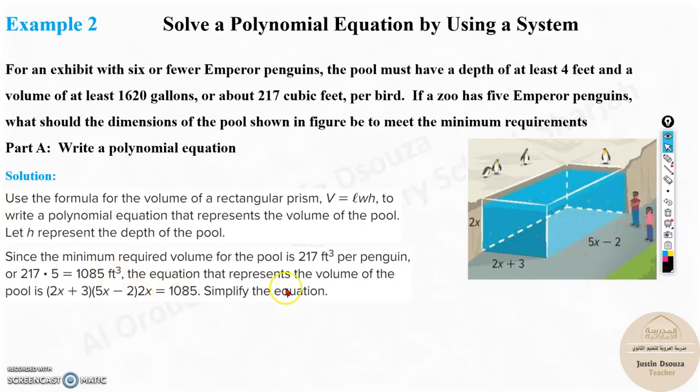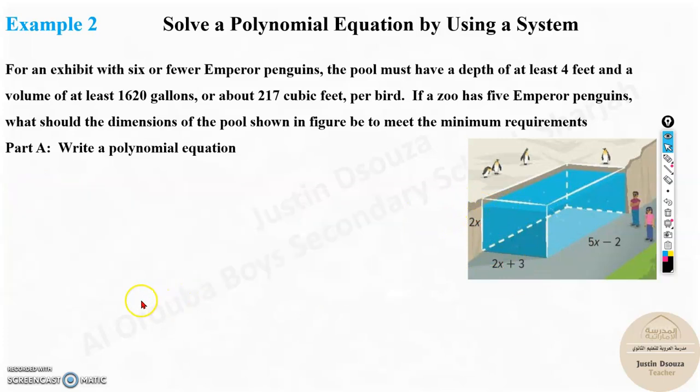Now, after that, the equation represents the volume. And what is the total volume over here? We can just easily solve it up. So now, solve it up in the sense, multiply all this. So the equation over here is 2x plus 3 times 5x minus 2 times 2x. That is equal to 1085 feet cube.